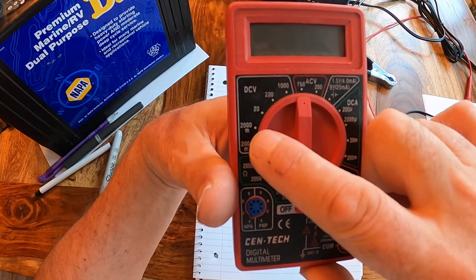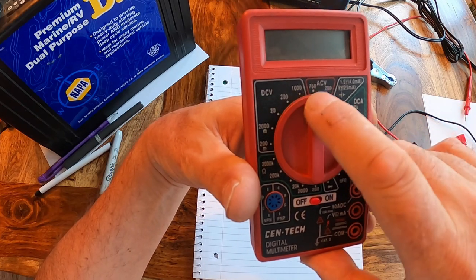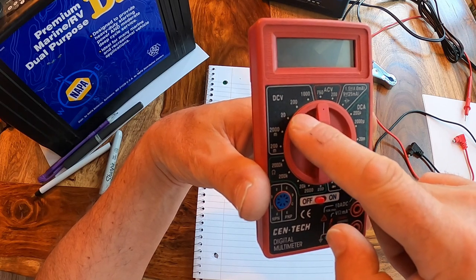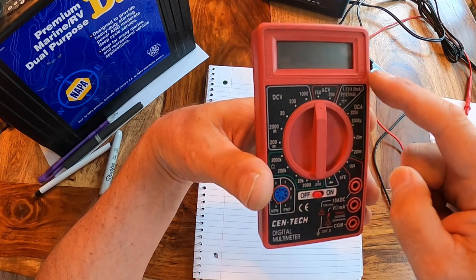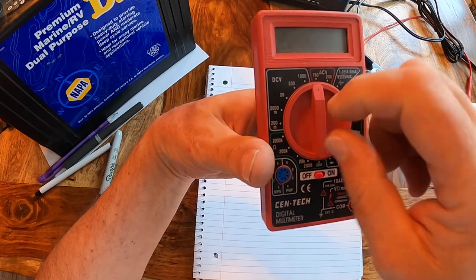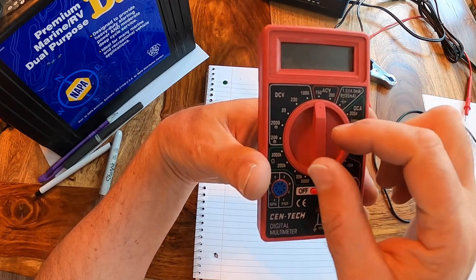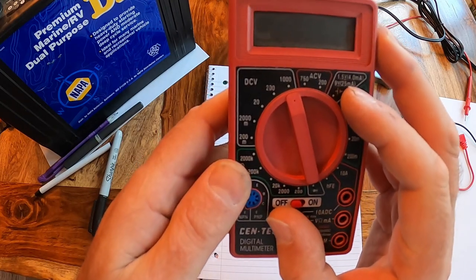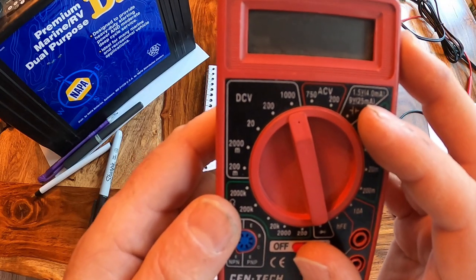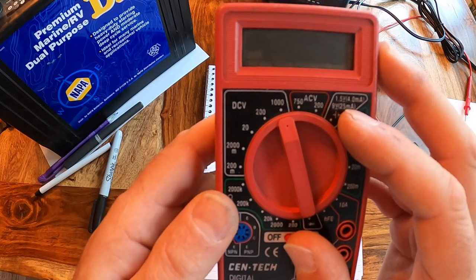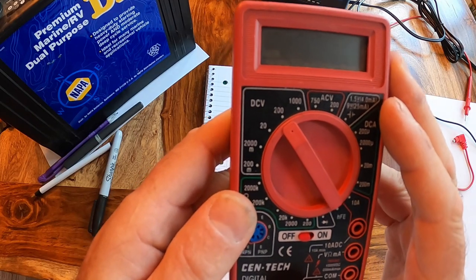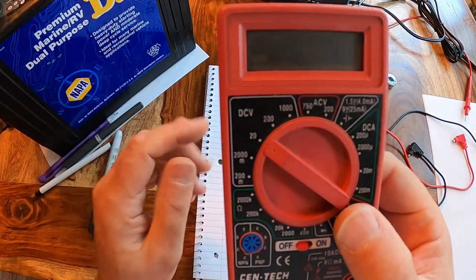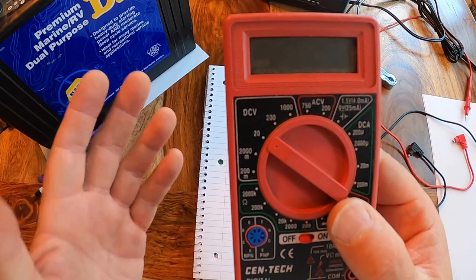If you look at this dial, you'll see DC volts. It starts at 200 millivolts, 2,000 millivolts, 20 volts, 200 volts, 1,000 volts. Then there's AC volts, DC amps, and other things. We want to measure DC volts. We have to tell it how many DC volts. We want to measure something around 20 volts. That's a good place to start.